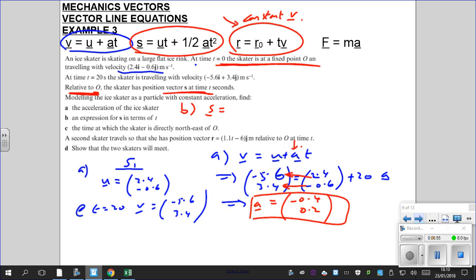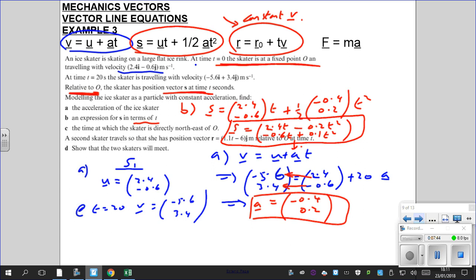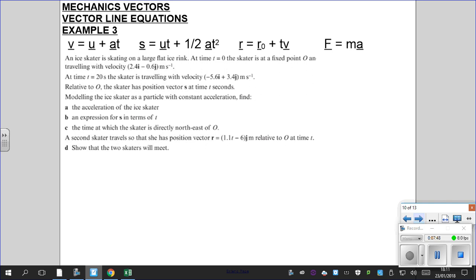So part B, so we're talking s equals u, and u was 2.4, -0.6 times by t, and remember it's a general t, because it says in terms of t, it's not at the 20 seconds, that just told us our final velocity at that time. But now we're talking generally, and a is -0.4 and 0.2, and we've got t squared. So that's one way of doing it, or you can just put it all together straight away. So 2.4t minus half lots of that, so that's 0.2t squared, and we've got -0.6t plus half of that, so that's 0.1t squared. You see, you can put it as one big vector, which is actually nicer to work with.